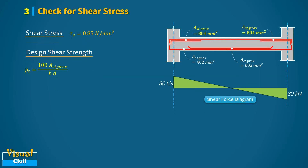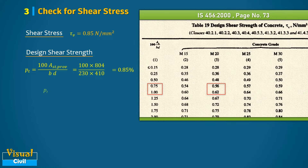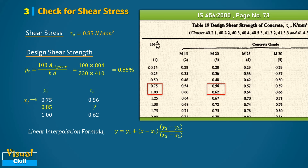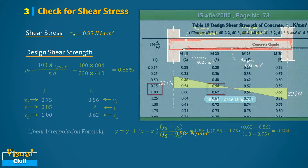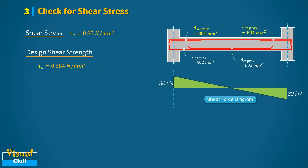By inputting the values for provided steel area, beam width, and beam depth, the steel percentage is 0.85%. With this steel percentage and M20 concrete grade, we compute the design shear strength tau_c using linear interpolation. After performing the linear interpolation, tau_c equals 0.584 N/mm². The shear stress tau_v exceeds the shear strength tau_c.